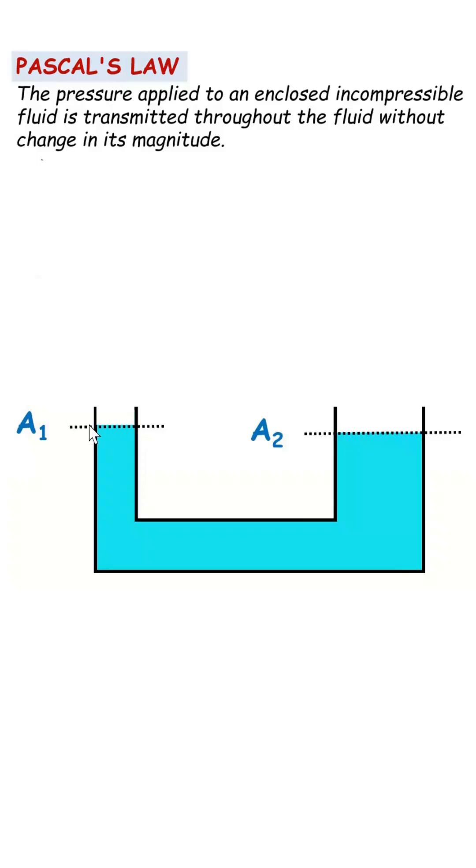The area of cross section at this opening of pipe is A1 and the area of cross section at this opening of pipe is A2.